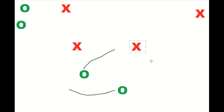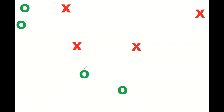Teams will often extend the defensive backs so the initial alignment is slightly outside the outside receiver and slightly inside the inside receiver to provide even more leverage to play those routes effectively. A potential problem with this coverage is if both receivers go into the same zone — say one goes vertical and immediately the other goes out — which can leave one defensive back behind the play.